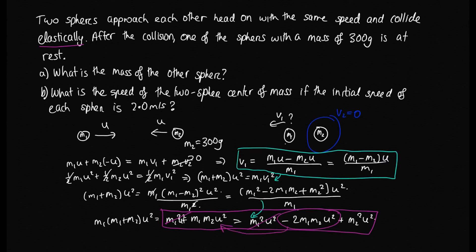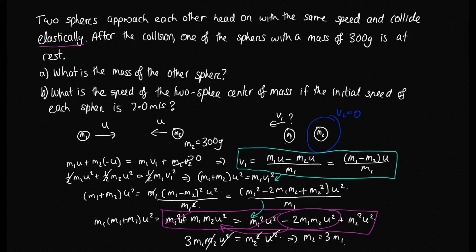The M1²U² terms on both sides cancel. Moving terms, we get 3M1M2U² = M2²U². The U² terms cancel, one M2 cancels, leaving M2 = 3M1. Since M2 = 300 grams, M1 = M2/3 = 300/3 = 100 grams. After quite a lot of algebra, we find the mass of the other sphere is 100 grams.